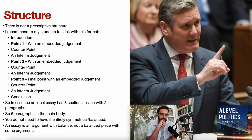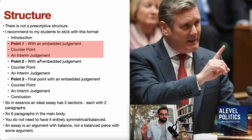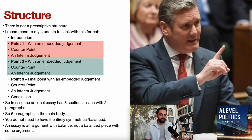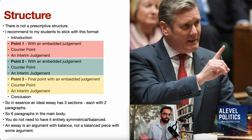My view is that you probably need a three-point essay. You have an introduction, then point one with an embedded judgment, a counterpoint with an embedded judgment, and an interim judgment — that's section one. Section two is a second point with an embedded judgment, a counterargument, and an interim judgment. Section three is a third point, a counterpoint, and an interim judgment. In a sense, you're doing the same thing three times over — and that's how I think you should put a 30-marker together.